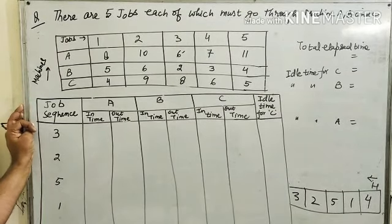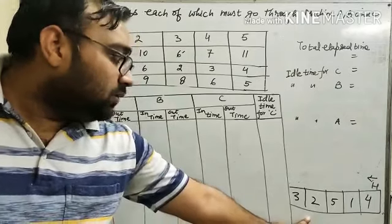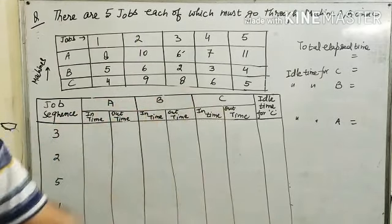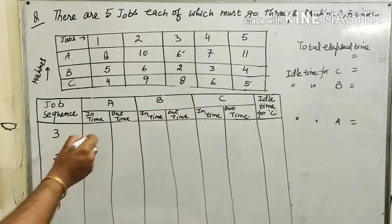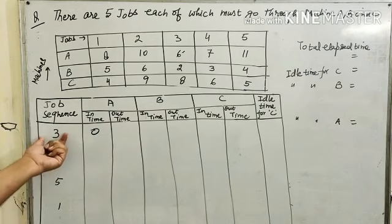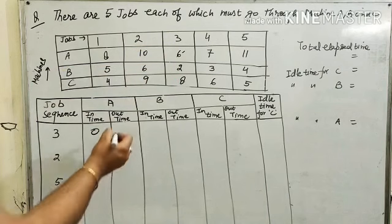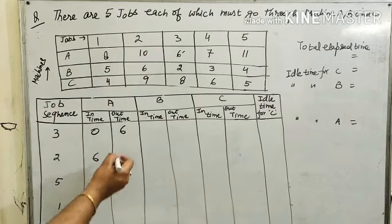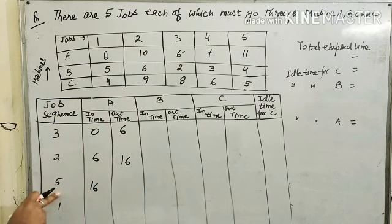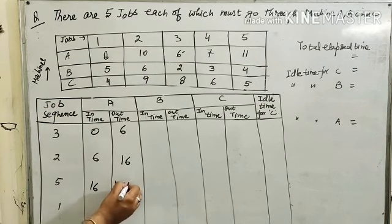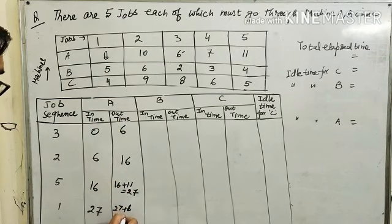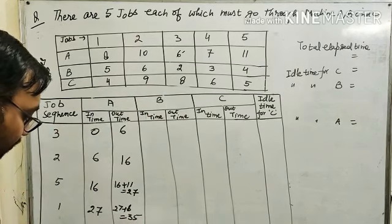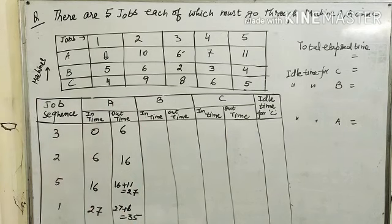This is the table for finding the total elapsed time. The job sequence we found is 3, 2, 5, 1, 4, and A, B, C are the three machines. Machine A will start from 0. For job 3, machine A takes 6 hours, completing at 6. The next job takes 10 hours, completing at 16. Then 11 hours for job 5, so 16 plus 11 equals 27. The next job takes 8 hours: 27 plus 8 equals 35. The last job takes 7 hours: 35 plus 7 equals 42. Total elapsed time for machine A is 42 hours.